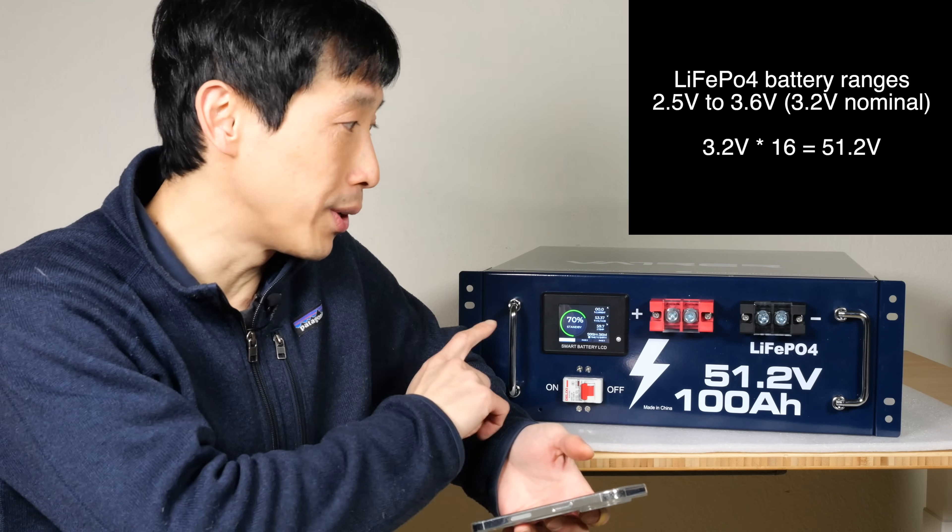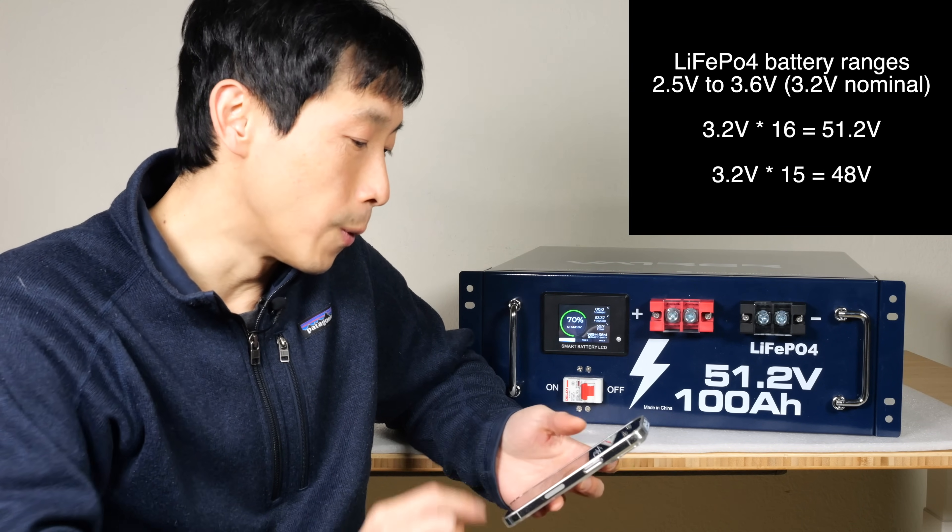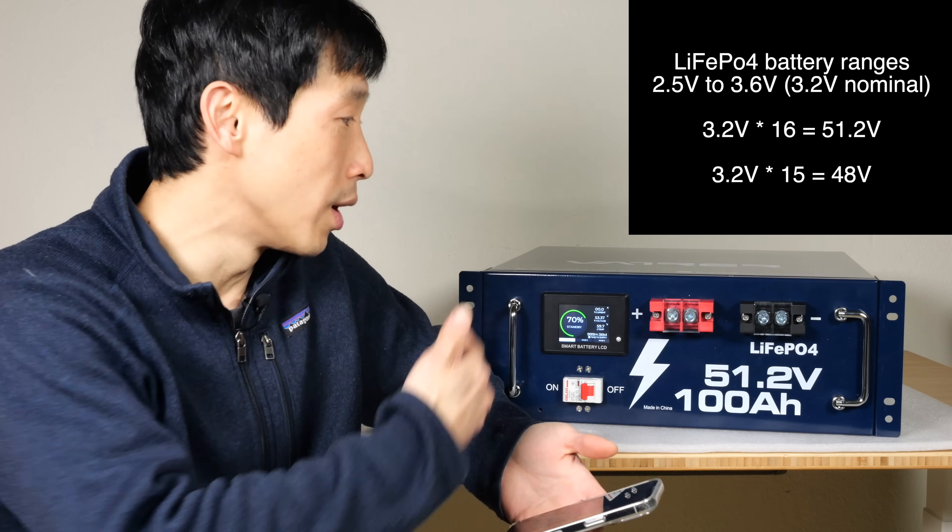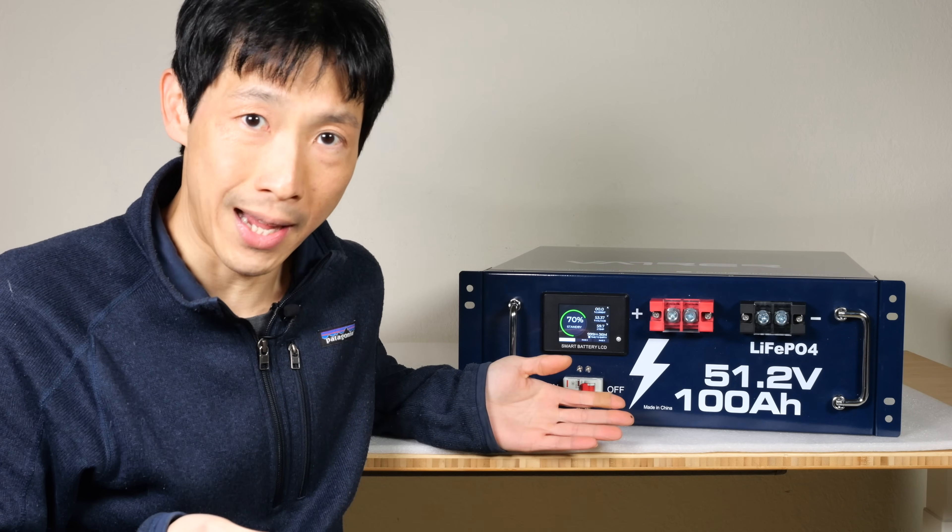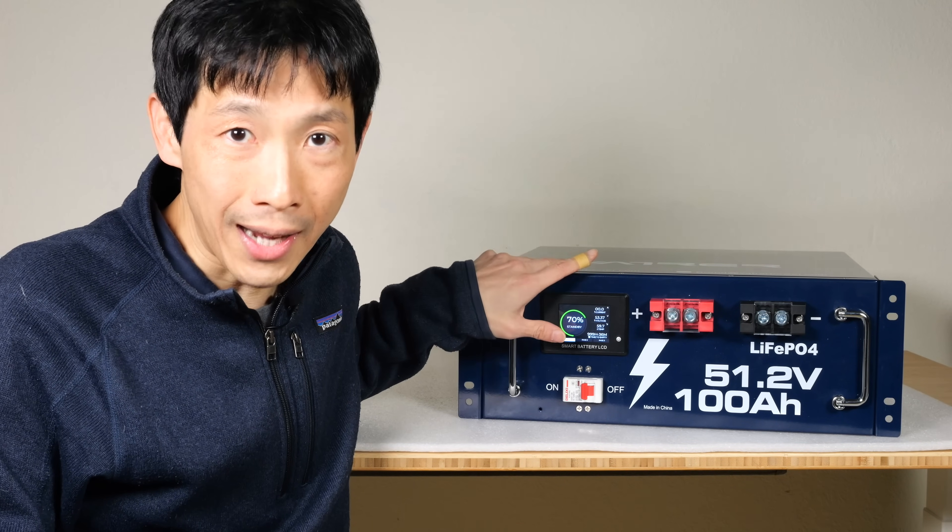Some older rack mount batteries will only put in 15 cells inside these things. So 15 times 3.2V. So it's going to have a nominal voltage of 48V. When you have one less cell in there, with all things equal, it's going to have less capacity, of course.